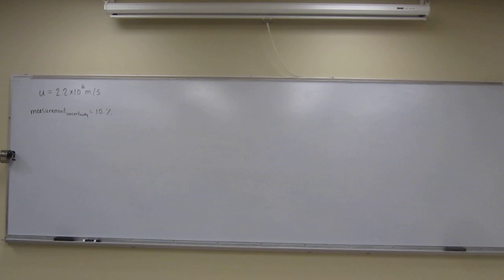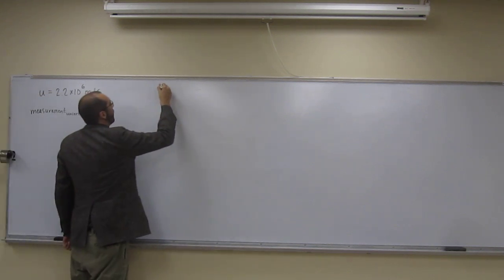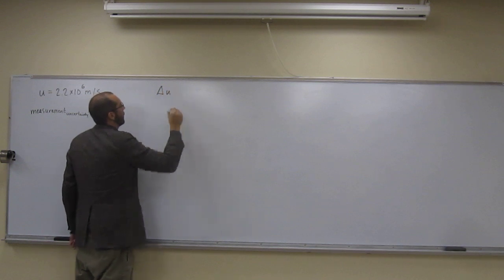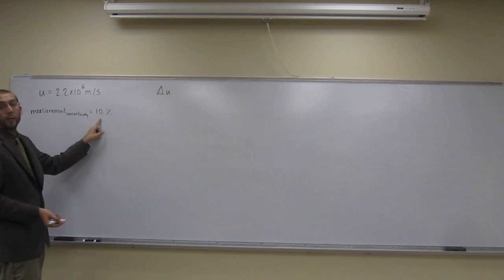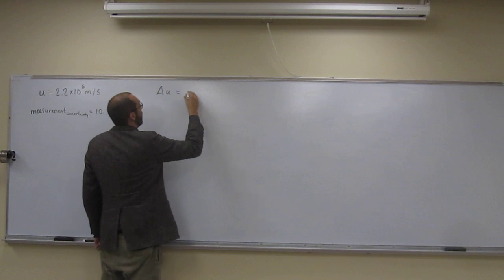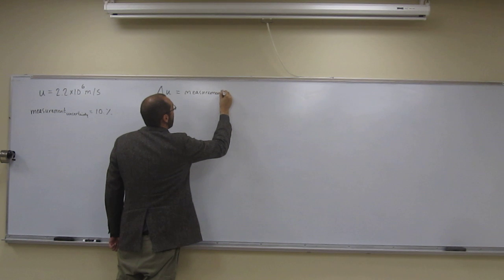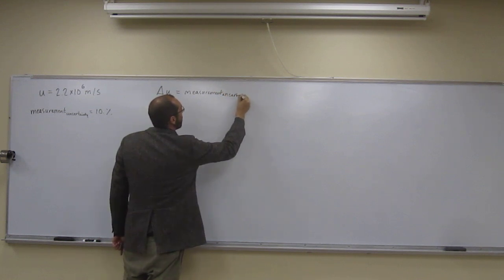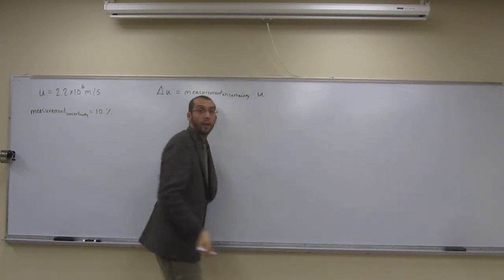In order to do this, you have to remember some of these formulas. The first thing you're going to be looking for is the uncertainty in the velocity. They give you the uncertainty in the measurement, they say it's 10 percent. So the uncertainty in the velocity is just going to be the measurement uncertainty times the velocity itself.